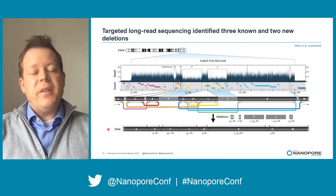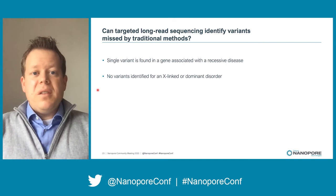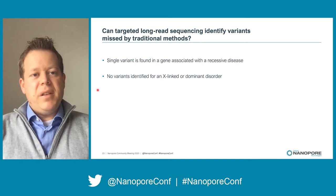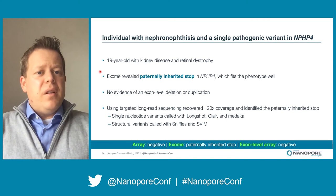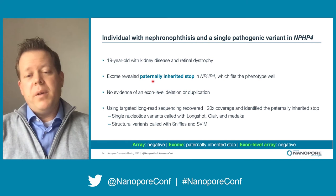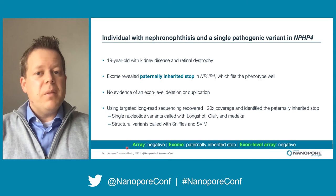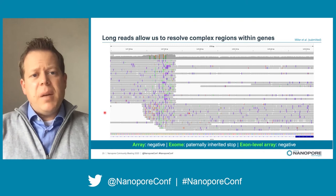Next we wanted to see if we could identify missing variants using targeted long read sequencing — cases with a single variant in a recessive disease gene or no variant found in a suspected dominant or X-linked disorder. To date we've looked at nine cases meeting this criteria. One was from a young man with nephronophthisis, where an exome revealed a single paternally inherited stop variant in NPHP4 but no second variant in the gene. Targeting NPHP4, we recovered about 20x coverage and identified the paternally inherited stop using our analysis pipeline, which included variant calling with LongShot, CLAIRE, and Medaka, and structural variant calling with Sniffles and SVIM.